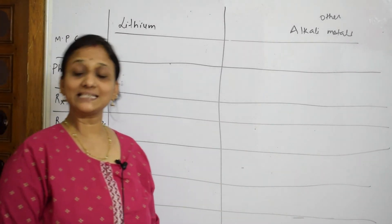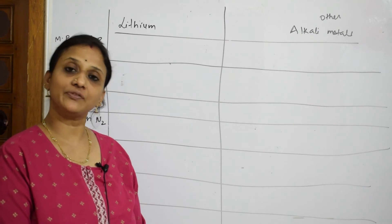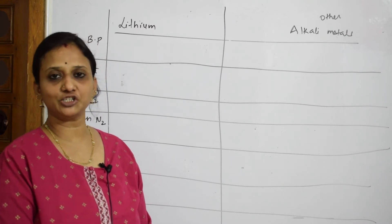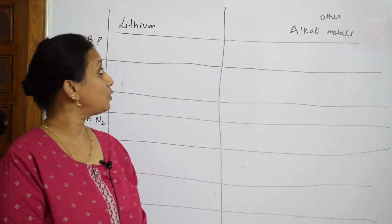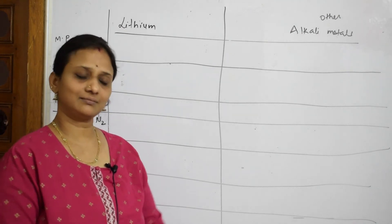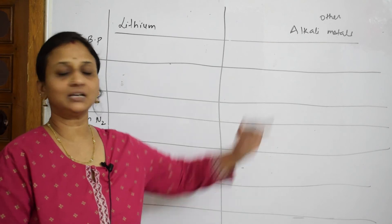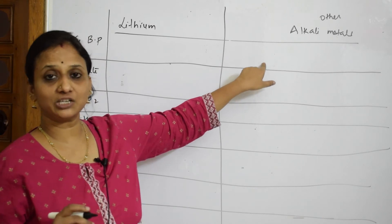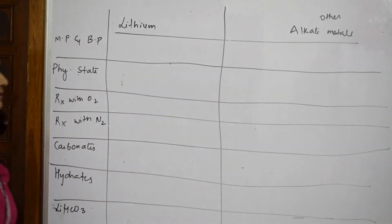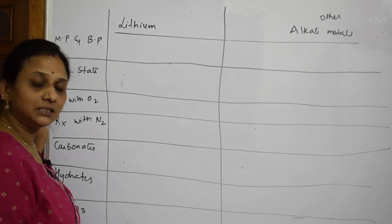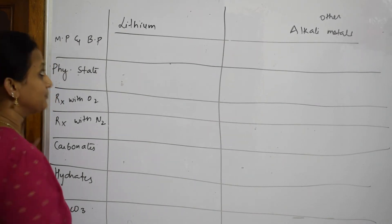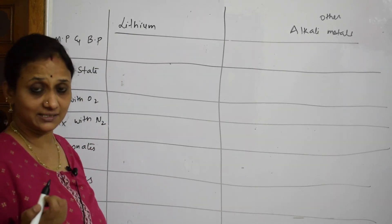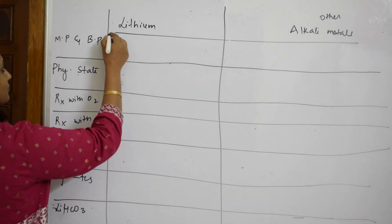Now let us look at the anomalies of lithium specifically compared to other alkali metals. Because lithium's size is very small and ionization enthalpy is very high, its melting point and boiling point are very high compared to other alkali metals, which have somewhat lower melting and boiling points.